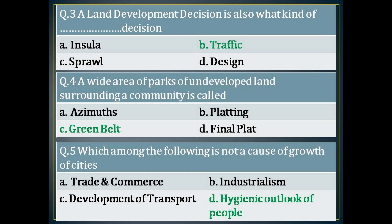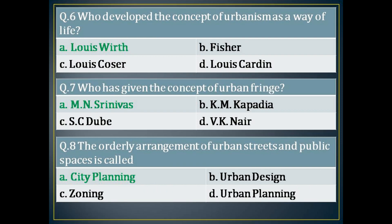The third question: a land development decision is also what kind of decision? The correct answer is: traffic. The fourth question is: a wide area of parks or undeveloped land surrounding a community is called? The correct answer is: Greenbelt. The fifth question is: which among the following is not a cause of growth of cities? The answer is: hygienic outlook of people.